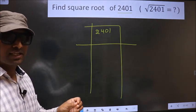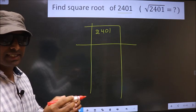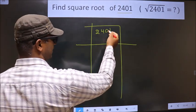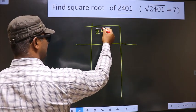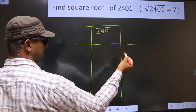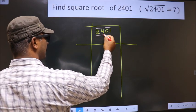Now we should divide the given number into pairs, starting from this side. These two numbers, one pair and these two numbers, another pair. Now here we have 24.